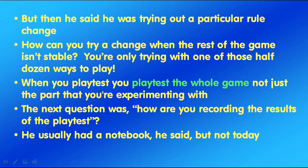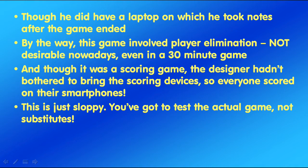Then he said he was trying out a particular rule change. My reaction was: how can you try a change when the rest of the game isn't stable? You're only trying the change with one of those half dozen ways to play. When you play test, you play test the whole game, not just the part that you're experimenting with. When I asked how he was recording the results of the play test, he said he usually had a notebook but not today. He did have a laptop and took notes after the game ended. And though it was a scoring game, he hadn't bothered to bring the scoring devices, so everyone scored on their smartphones. This is just sloppy — you've got to test the actual game, not substitutes.